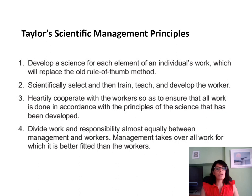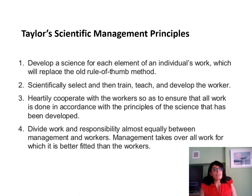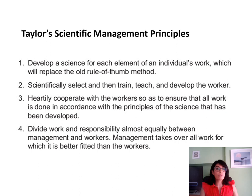Taylor's basic principles were: first, to create a science for each part of an individual's work so that you can measure and analyse it, replacing the old rule-of-thumb method. Second, to scientifically select, train, teach and develop each individual worker — giving them a theory for selection and further development. Third, to cooperate with your workers so that everything they do is done in accordance with the principles of the science developed. Fourth, to divide work and responsibility almost equally between managers and workers, but focus managers on work better suited to them rather than the workers they manage.